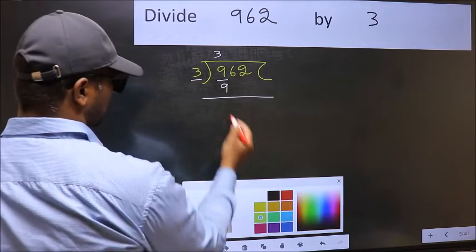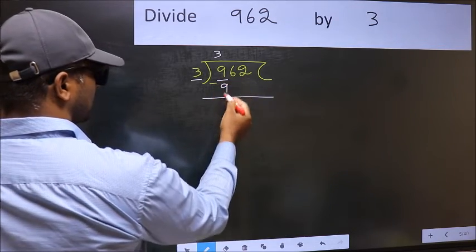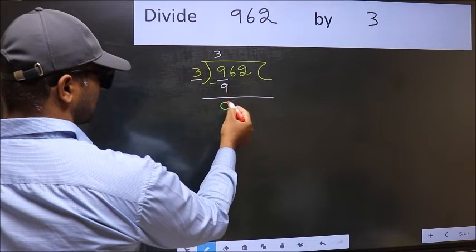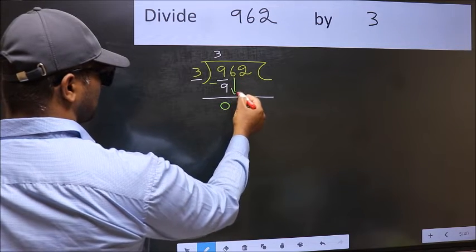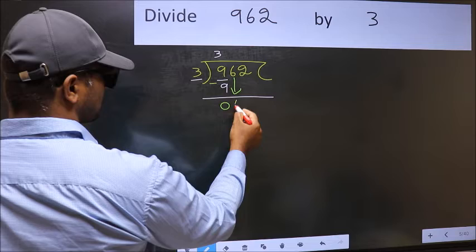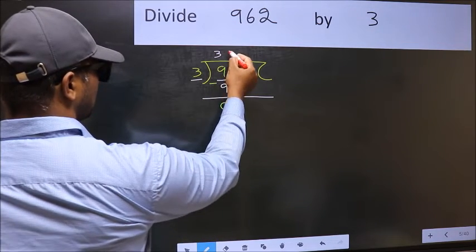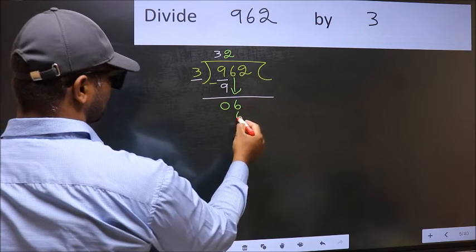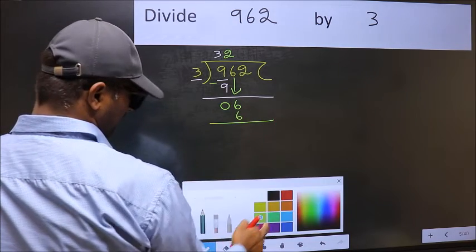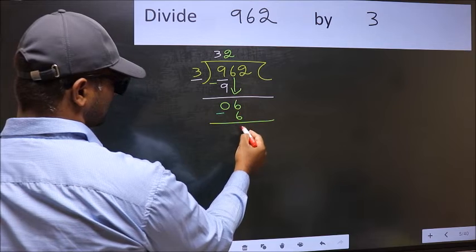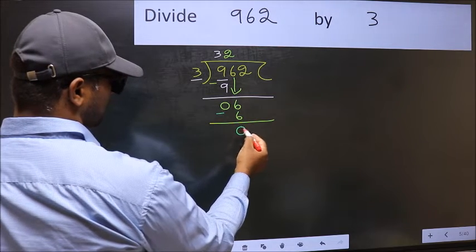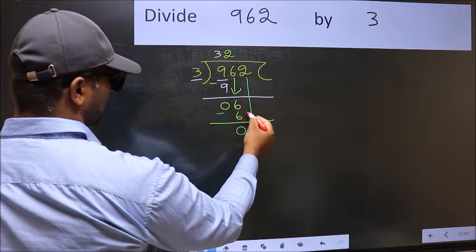After this bring down the beside number so 6 down. Now 6, when do we get 6 in 3 table? 3 times 2 is 6. Now you should subtract 6 minus 6, 0. After this bring down the beside number so 2 down.